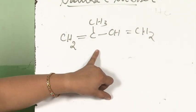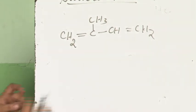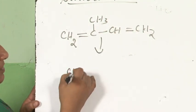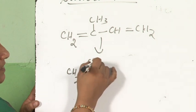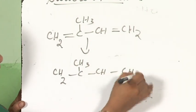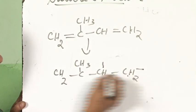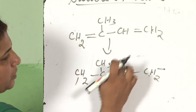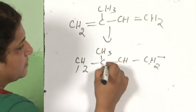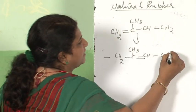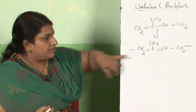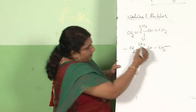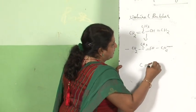When isoprene polymerizes, similar to 1,3-butadiene, the terminal bonds break. The middle bond shifts, and combining the two end carbons gives a double bond between them. So the repeating unit can be written in cis form as well as trans form.